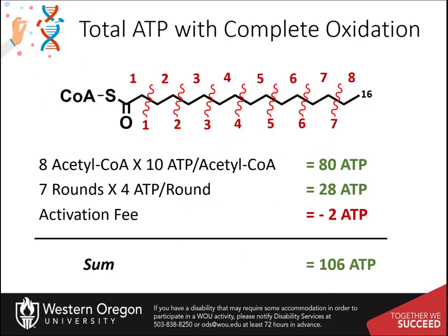Now if we go back and evaluate the entire fatty acid, we can calculate how much ATP will be generated. For a 16-carbon fatty acid, the 8 acetyl-CoA molecules will generate 80 ATP, and the 7 rounds of beta-oxidation required to generate them will yield an additional 28 ATP.